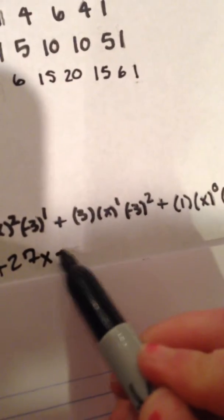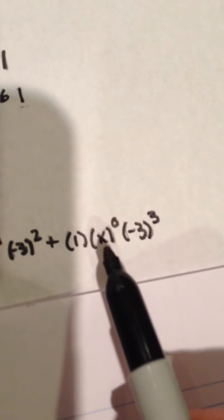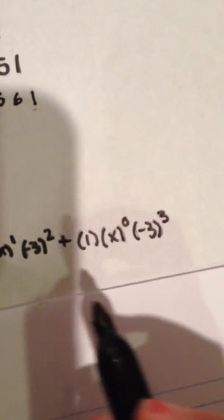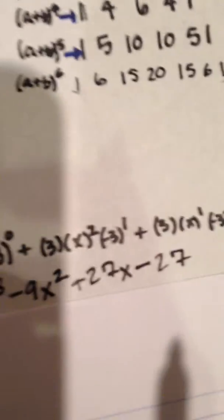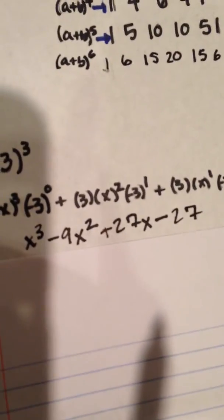Next one will be negative multiplied by one. These both cancel out. They're ones. This is negative three to the third power, which is negative 27, which makes this negative 27. And this is our entire expanded binomial right here.